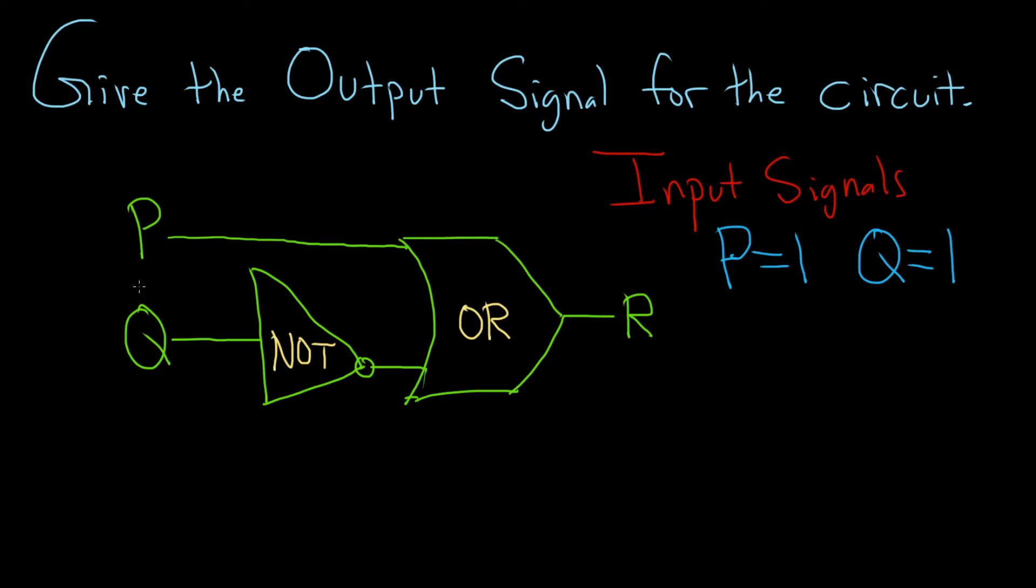Give the output signal for the circuit. We have the input signals P equals 1 and Q equals 1.